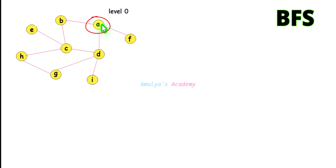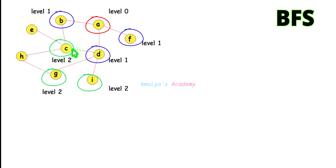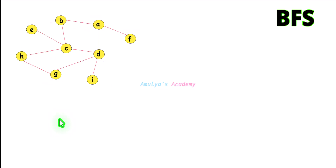If I take A as the starting node at level 0, then in the next step I need to visit all the connected nodes of A: B, D, F — so that is level 1. Next we need to visit all the connected nodes of previously visited nodes: C, G, I — so this is level 2, and then level 3.